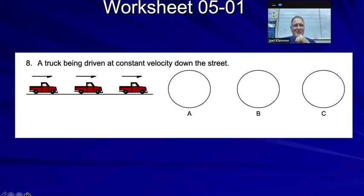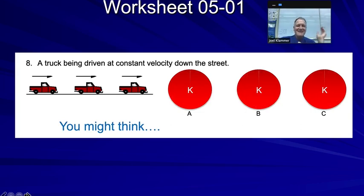Take a look at this last problem before I let you go on the worksheet. It's a truck being driven at constant velocity down the street. You're like, oh, this is the easiest one on the sheet. It's just like it's all kinetic energy. It's all kinetic energy. It's all kinetic energy. If this was true, this would be quite handy. You would never have to add any energy to your car to keep it going at a constant speed. In reality, you might know, wait a second, to keep your truck going at a constant speed down the road, you have to burn petrol or gasoline.